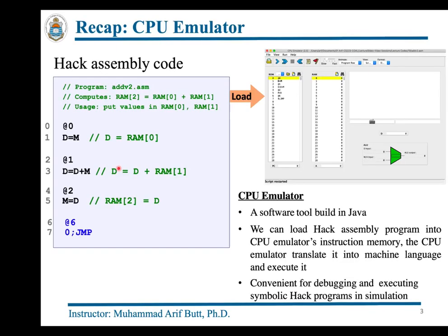In the last session we saw a Hack assembly program that sums up the contents of RAM locations 0 and 1 and writes the result at RAM location 2. We executed this program inside the CPU emulator whose GUI was explained in detail. We also talked about the two special instructions placed at the end of every program for proper program termination.